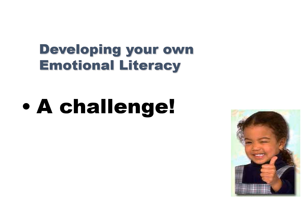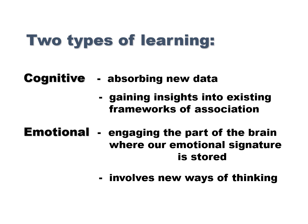Developing your own emotional literacy can present a challenge. There are basically two types of learning. The first is cognitive learning — absorbing new data, gaining insights into existing frameworks of association. The second is emotional learning — engaging the part of the brain where our emotional signature is stored. This involves new ways of thinking and can be more challenging, because when someone challenges you emotionally it can feel more personal.